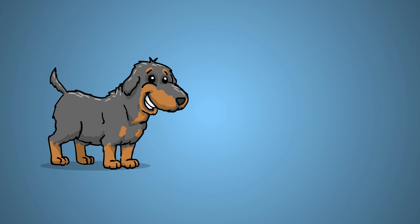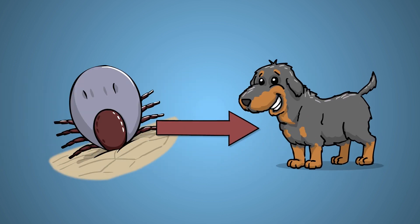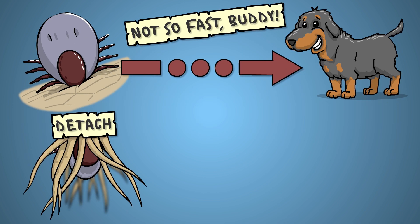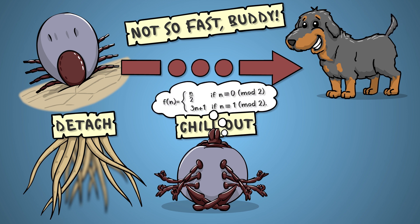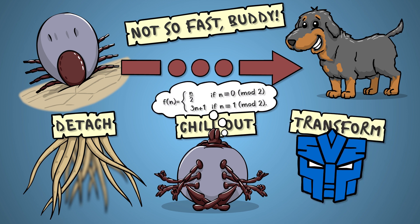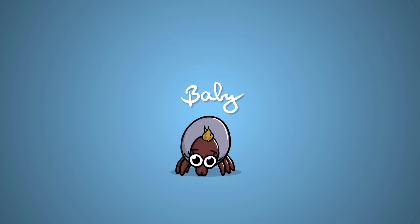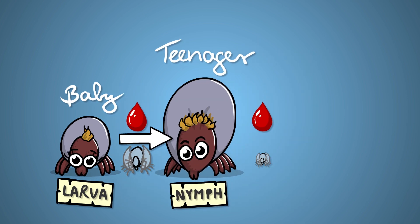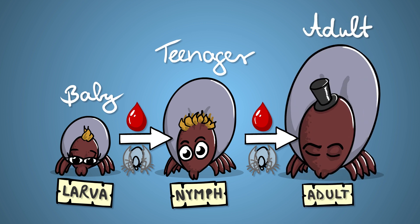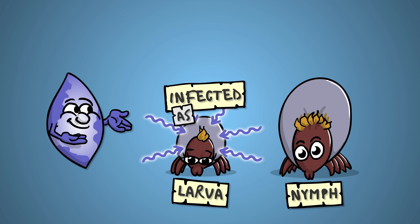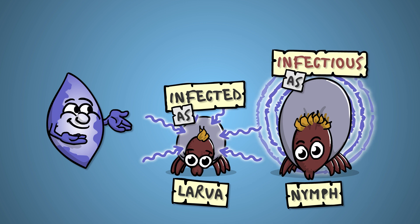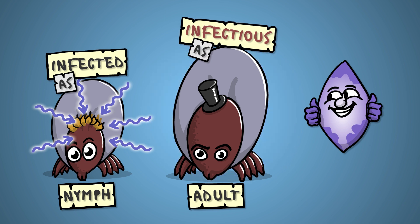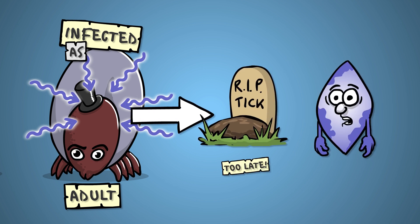Overwhelmingly, it's dog infects tick, tick infects dog. However, ticks don't become infectious right away after sucking up Babesia. First they need to detach from the dog and advance to their next developmental stage. There are baby ticks called larvae — they suck blood, molt and turn into teenagers called nymphs, who again suck blood, molt and turn into adults. So if a tick becomes infected as a larva, it will first become infectious as a nymph. If it gets infected as a nymph, it will only infect dogs as an adult. And if it acquires the infection as an adult, that's kind of the end of the line.